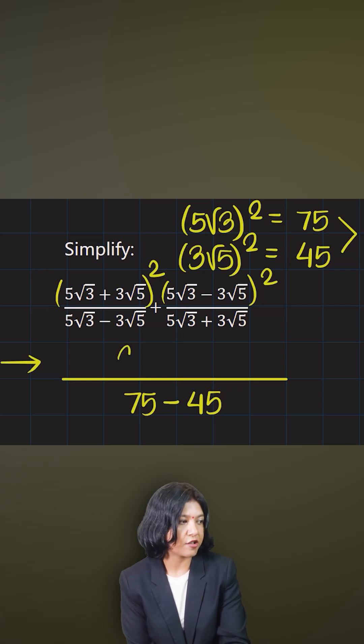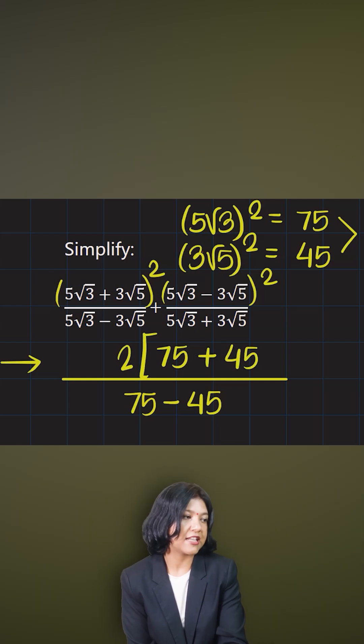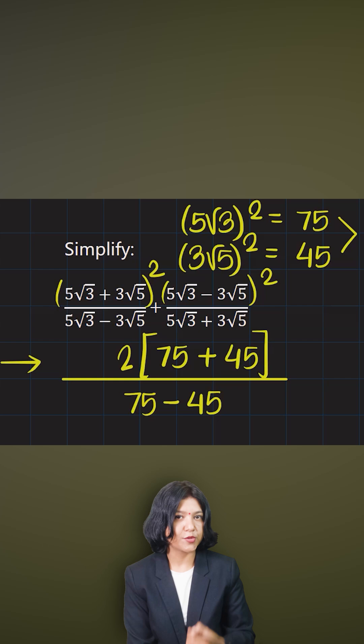Therefore, I'm saying that here, what am I going to do is I'm going to take the square of them individually, which is 75 and 45. Their square has to be taken twice, because I'm going to get two times each of these squares.